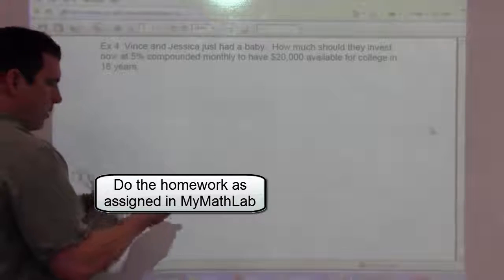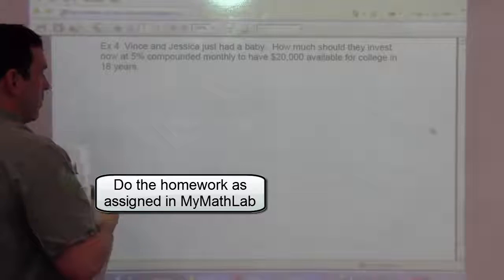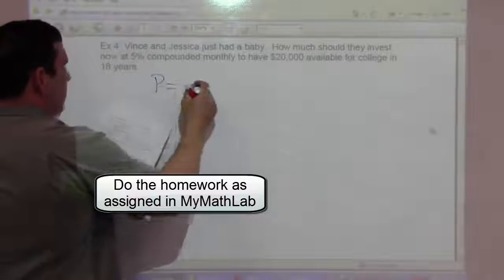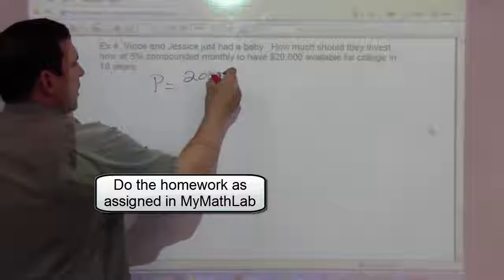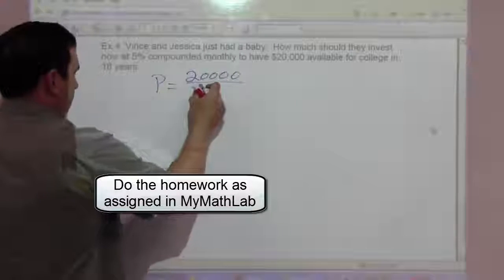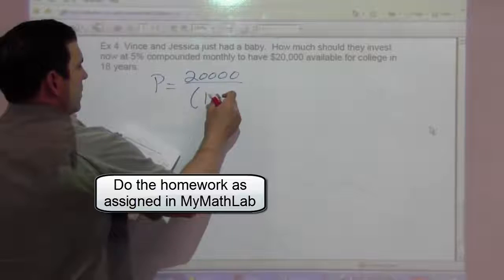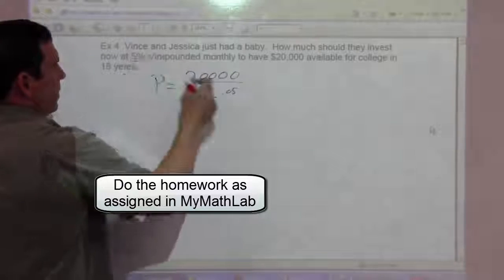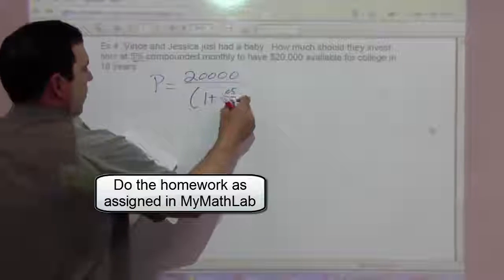So the present value, what we're trying to find out, P equals the future amount that they want to have divided by 1 plus 0.05 is the rate over 12